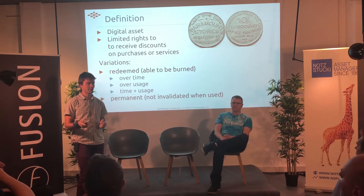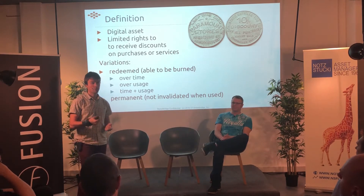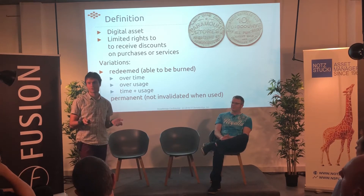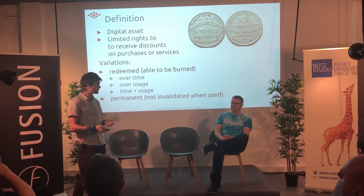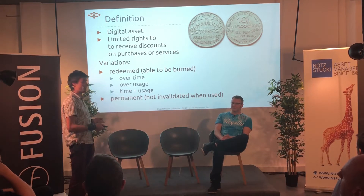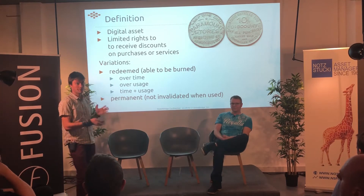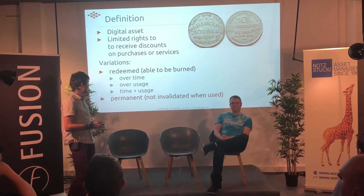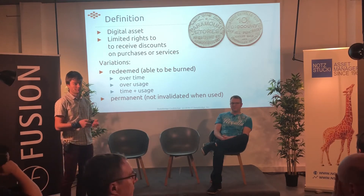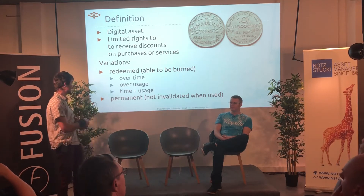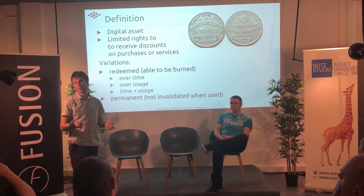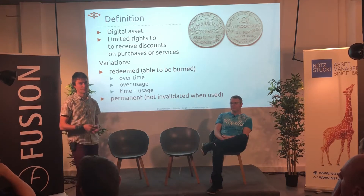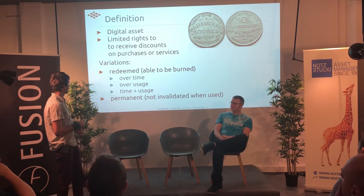For example, if you are a blood donor, you could get a permanent discount token for public transportation in certain countries — it will not disappear over time. There is a valid use case in the economy for having both types. We would like to highlight the permanent one especially, because it's very useful in ICOs and in how we can invest in projects.